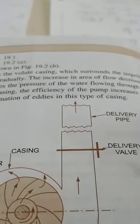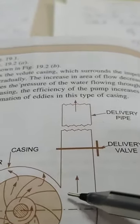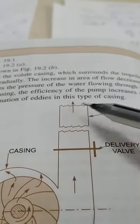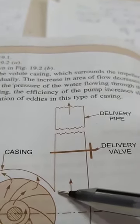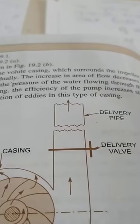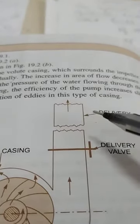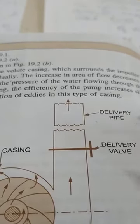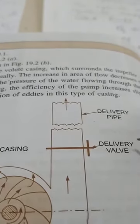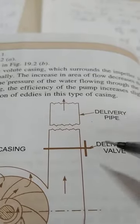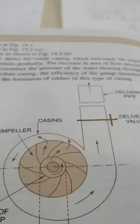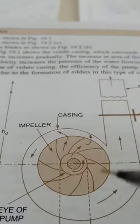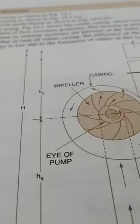The delivery pipe is the connection between the outlet of the impeller and where the water is to be discharged — that is the overhead tank. The pipe connecting the outlet of the impeller to the overhead tank is called the delivery pipe. There is also a valve on the delivery pipe by which we can regulate the flow of water into the overhead tank.